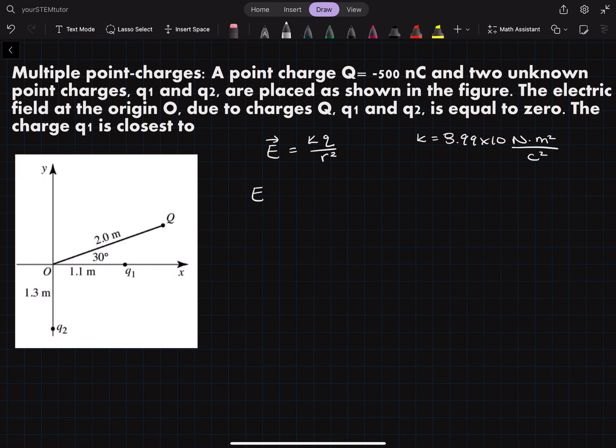So starting, since we know the charge for the big Q value, we're going to find that value for the electric field vector. So it's equal to k, our constant, times 500 nanocoulombs which would be 500 times 10 to the negative 9 coulombs.